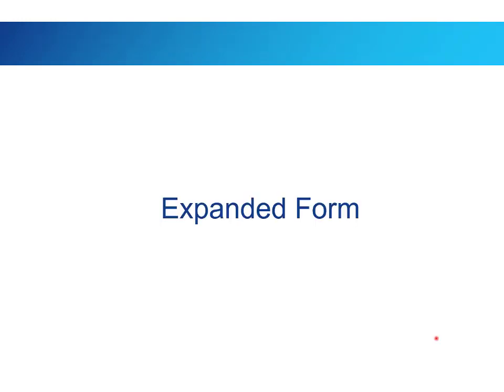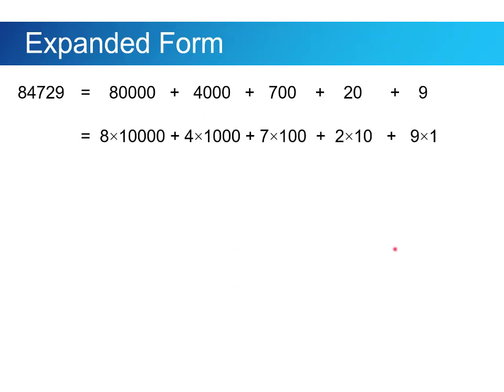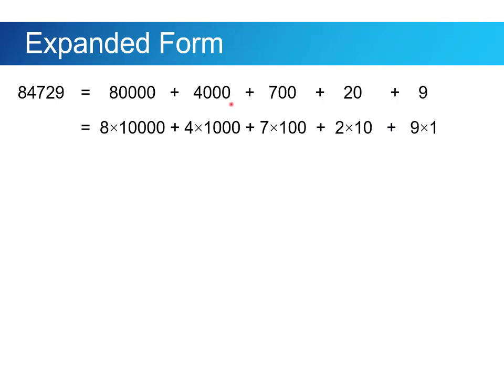Let's talk about expanded form. So when you see the number 84,729, you don't think of it as just a collection of digits. Each of those digits has a different value. So the 8 really represents 80,000, and the 4 really represents 4,000. Its place in the number tells us how much it's worth. Now where do we get those numbers from? Those are just powers of 10. So this is 8 times 10,000, 4 times 1,000, 7 times 100, and so on.